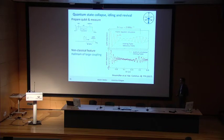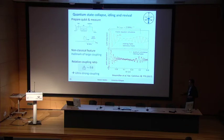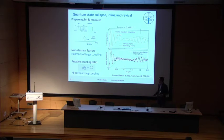We can also quantify this: taking the effective coupling strength G and the effective transition frequency, we obtain a ratio of G/ω = 0.6, which places us safely in the ultra-strong coupling regime.